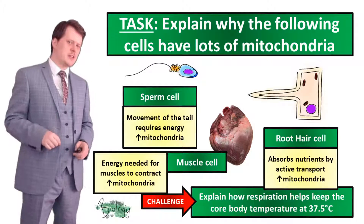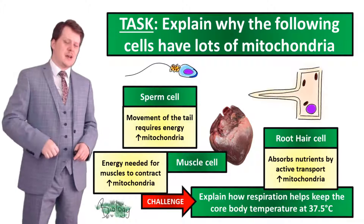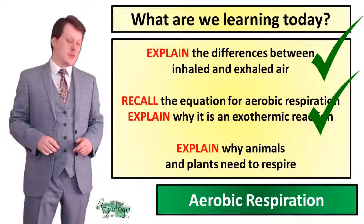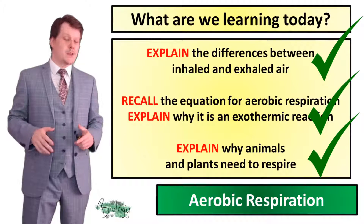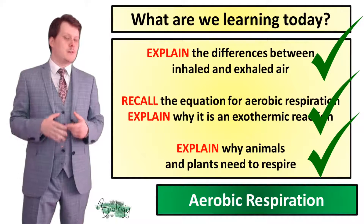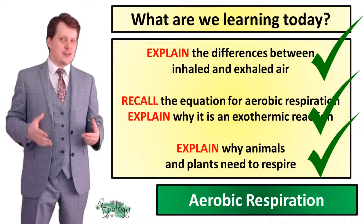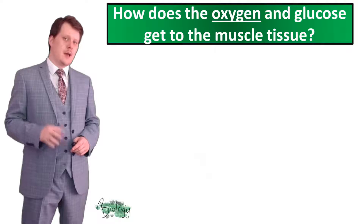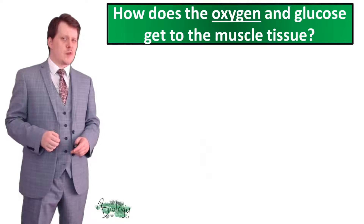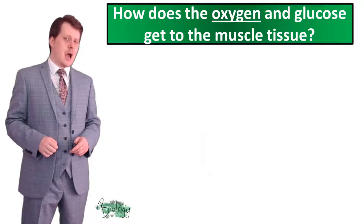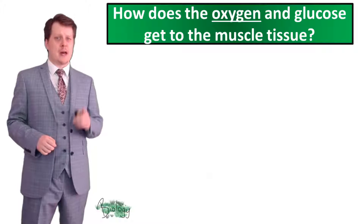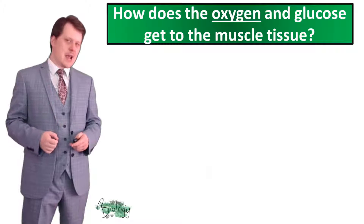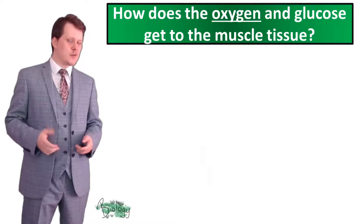Did you make any suggestions for the challenge? I'd like to hear about it in the comments below. So now we've explained why animals and plants need to respire — it's so they can have the energy to carry out their cellular functions. Now that we've defined what aerobic respiration is and what it does, let's talk about how that oxygen and glucose gets to the animal cells.